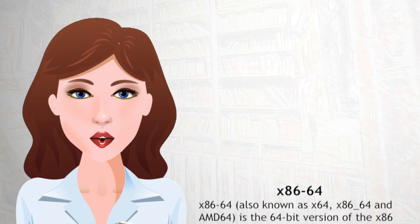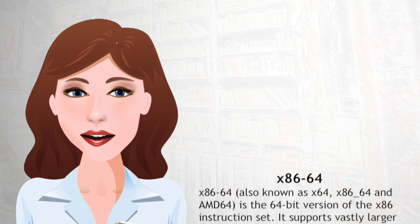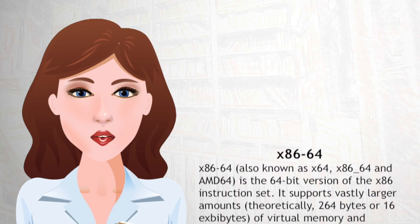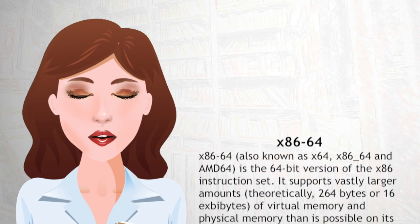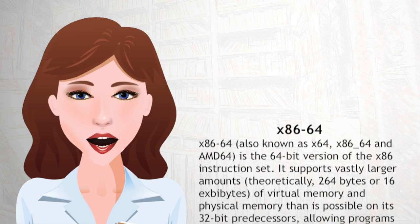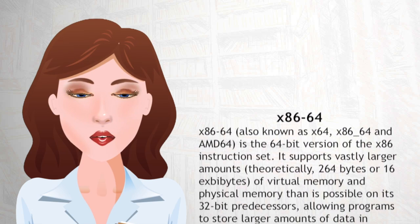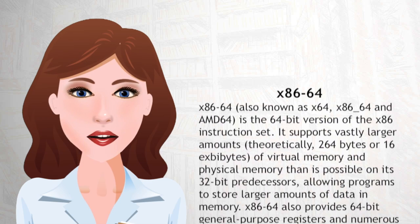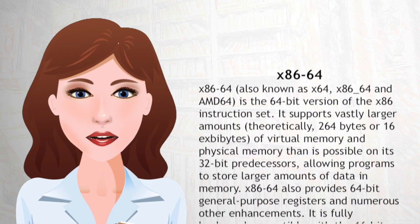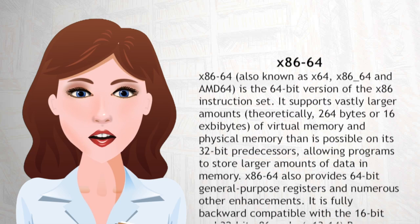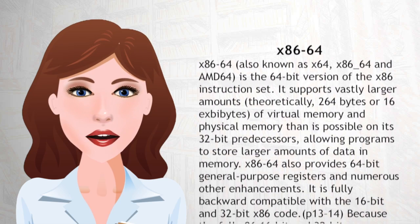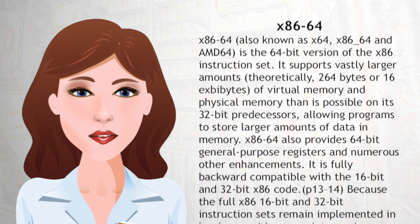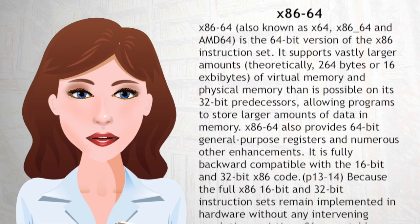X86-64, also known as X64, X86-64, and AMD64, is the 64-bit version of the X86 instruction set. It supports vastly larger amounts of virtual memory and physical memory than is possible on its 32-bit predecessors, allowing programs to store larger amounts of data in memory. X86-64 also provides 64-bit general purpose registers and numerous other enhancements.